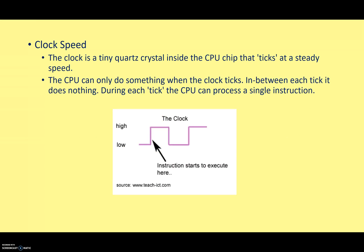The speed of your CPU is controlled by a clock. The clock is a tiny quartz crystal inside the CPU chip that ticks at a steady speed. The CPU can only do something when the clock ticks. In between each tick, it does nothing. During each tick, the CPU can process a single instruction.